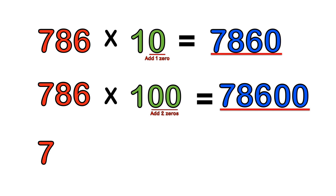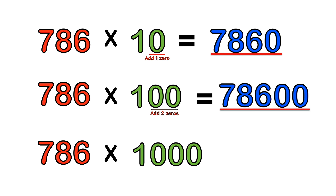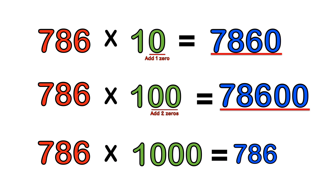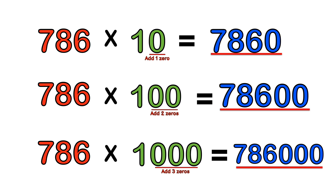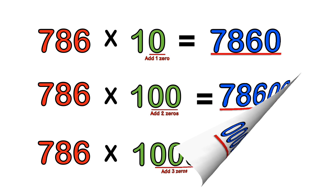How about 786 times 1000? Same thing. Step one: copy the whole number, put it in the answer. Step two: count the number of zeros and add them to the end of the number. So the answer is 786,000.